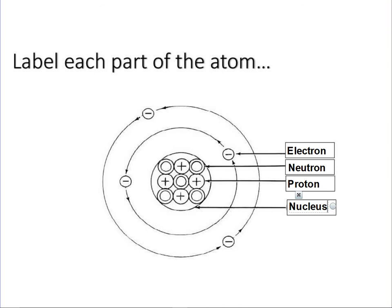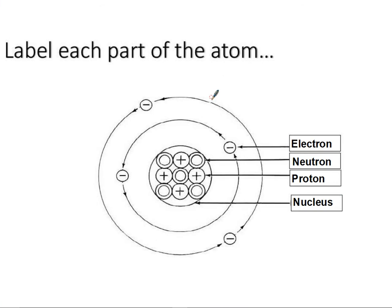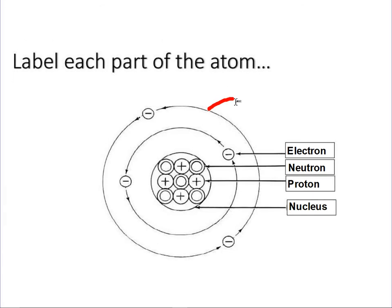I'm just going to add one more in here. The outside ring is called the electron cloud.